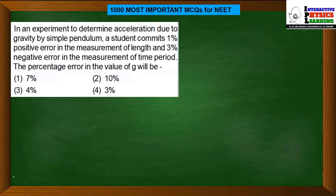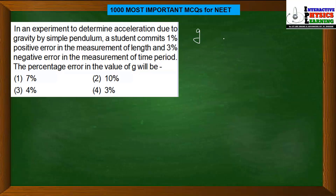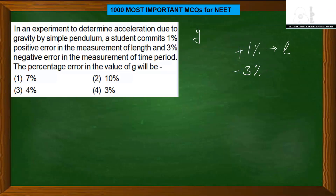Let's move to the next question. In an experiment to determine the acceleration due to gravity by a simple pendulum, a student commits 1% positive error in the measurement of length, and 3% negative error in the measurement of time period. The question asks for the percentage error in the value of g.